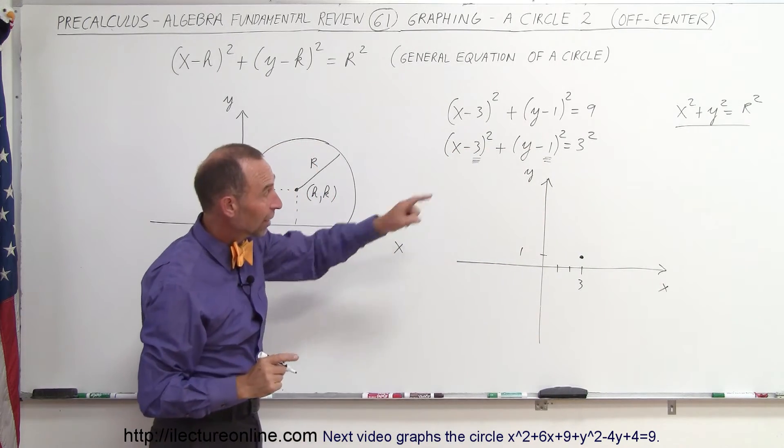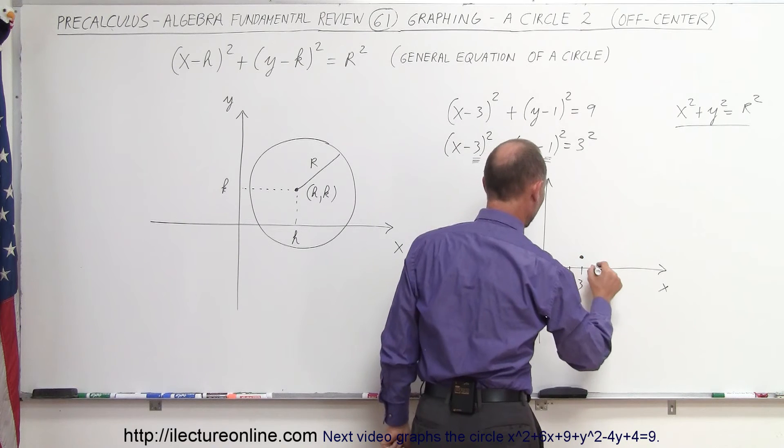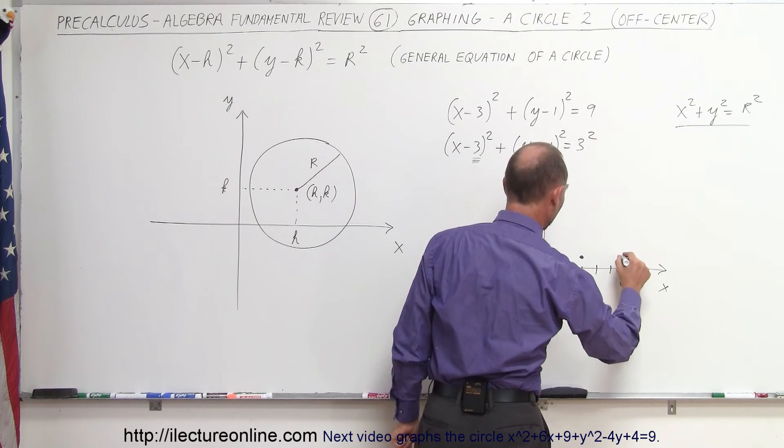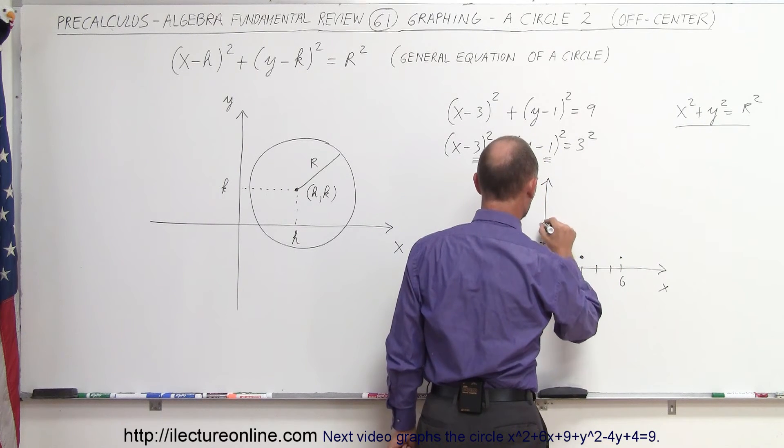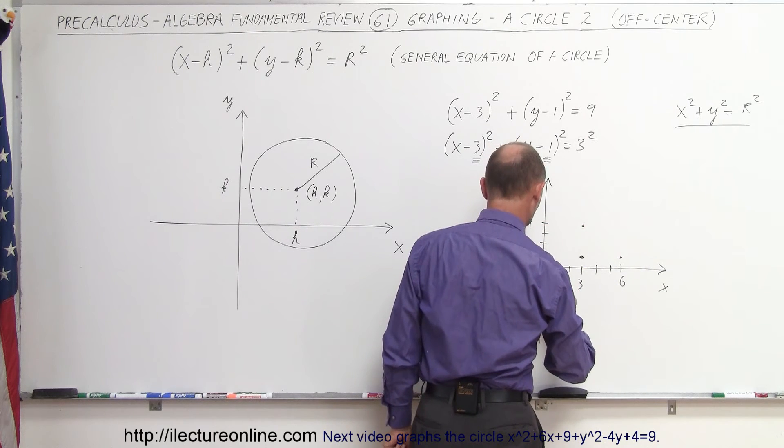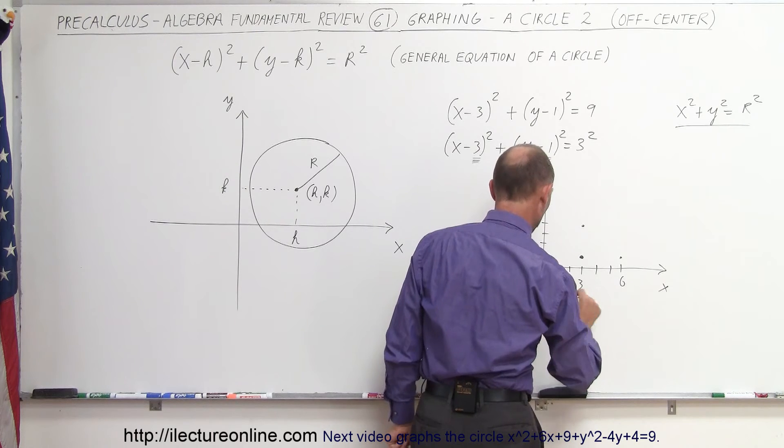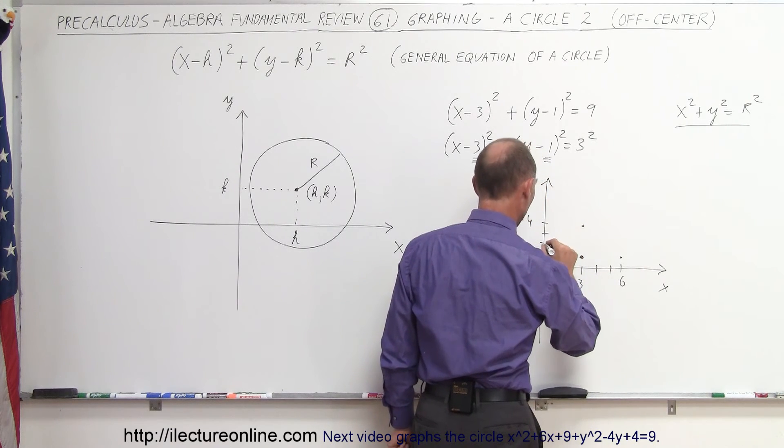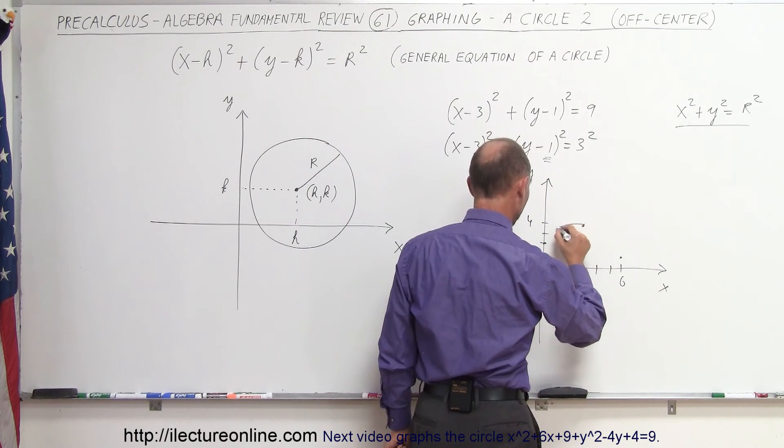And then we see that the radius is equal to 3. So in all directions, we go to the left 3, to the right 3, so that would be 6. We go up 3, 1, 2, 3, that would be 4 right there. And 1, 2, so 1, 2, 3, that would be at -2. And if we then go through all these points right there, we have ourselves a circle.